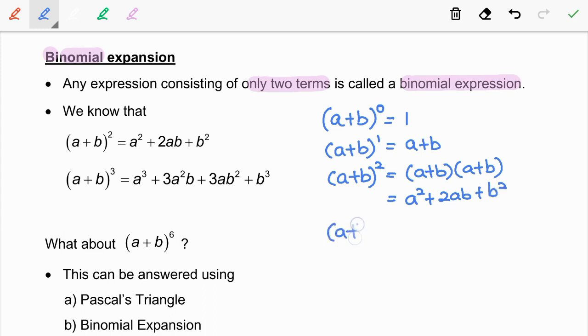Next, what about (a+b) cubed? We take (a+b) squared times another (a+b). After we expand this, we get a³ + 3a²b + 3ab² + b³.